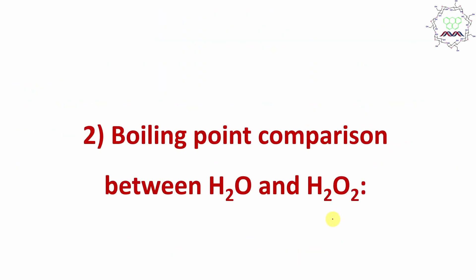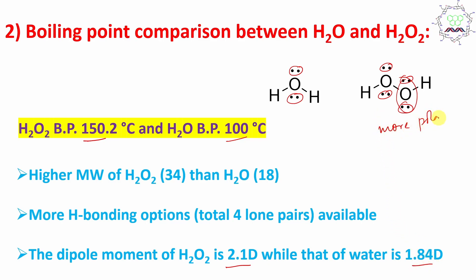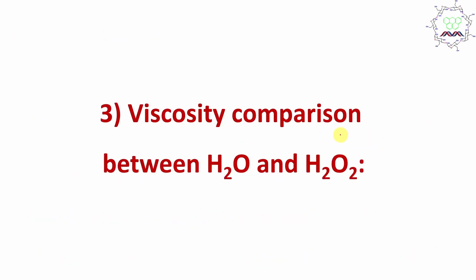Now let us go to the next point: boiling point comparison. Hydrogen peroxide has a higher boiling point than water — H2O2 boils at 150°C whereas water boils at 100°C. First, the molecular weight of hydrogen peroxide is higher due to the extra oxygen. Even more hydrogen bonding is possible because four lone pairs are present on H2O2 whereas only two lone pairs are present in water. Additionally, the dipole moment of H2O2 is higher, making it a more polar molecule — all of which results in a higher boiling point.